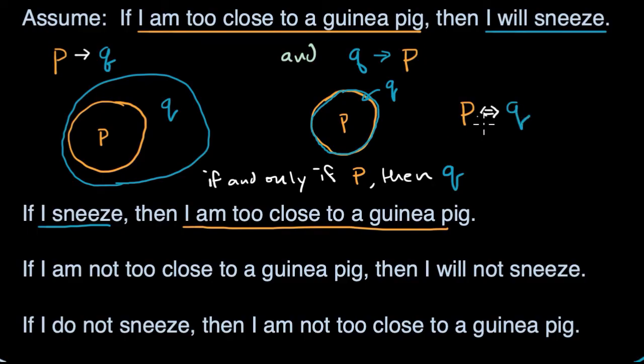P implies Q and Q implies P. From this statement, we could say if P, then Q, but we could also say if Q, then P.